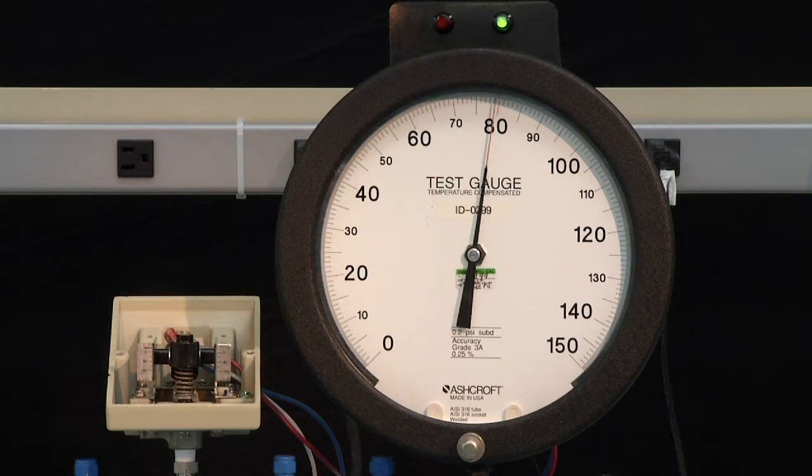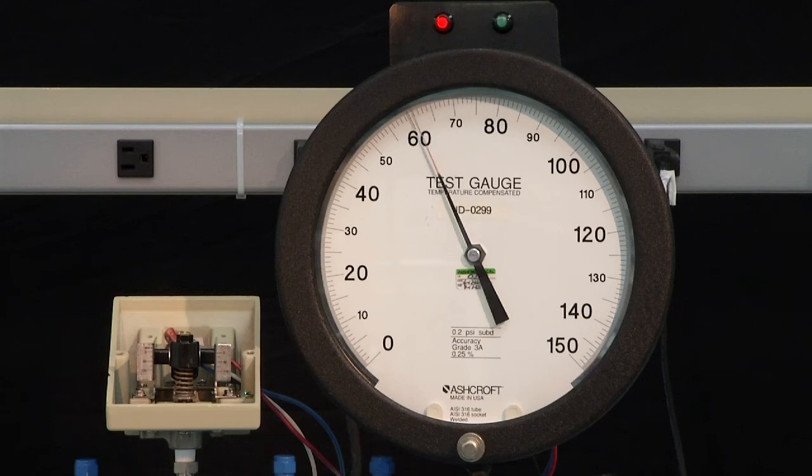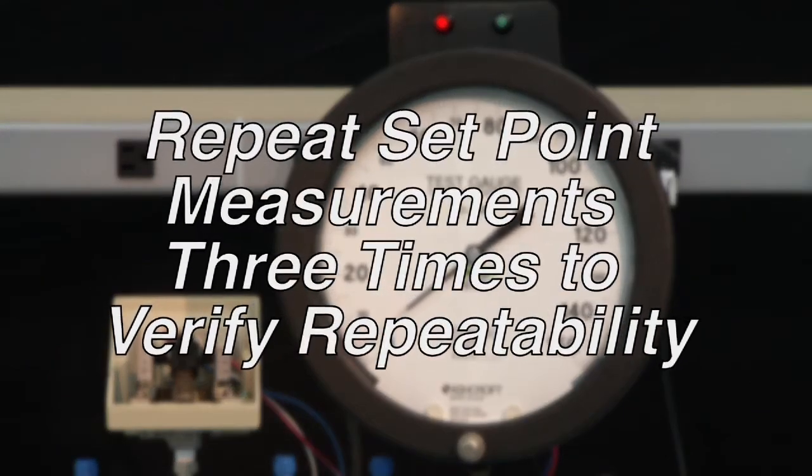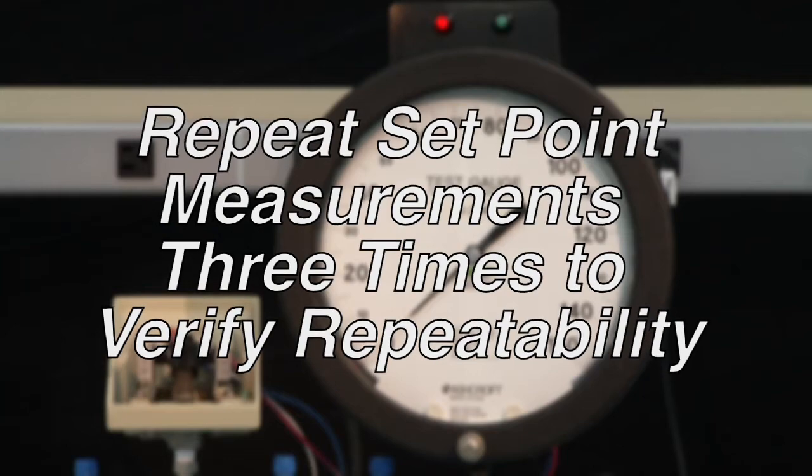And then we would go back very slowly and measure the deactivation for our dead band. That's our reset point. And then we would take it back to zero before we went up and measured the set point again. It is normal to repeat set point measurements three times to verify repeatability.